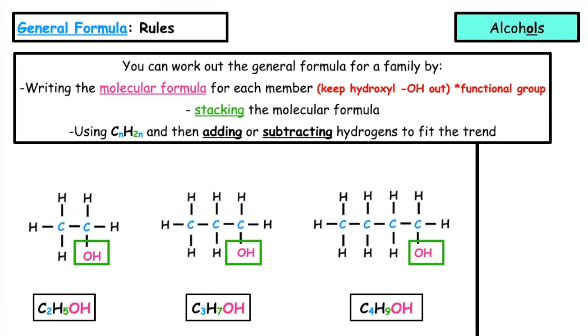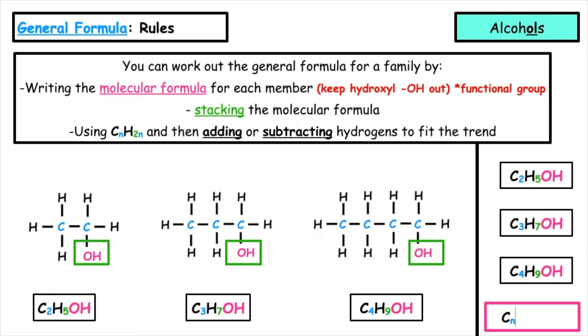We then stack the molecular formula on top of one another and use the CnH2N rule for working out the ratio of carbon to hydrogen atoms in the molecule. Following the rule CnH2N: two carbons times two is four, how do we get to five? We would plus one.